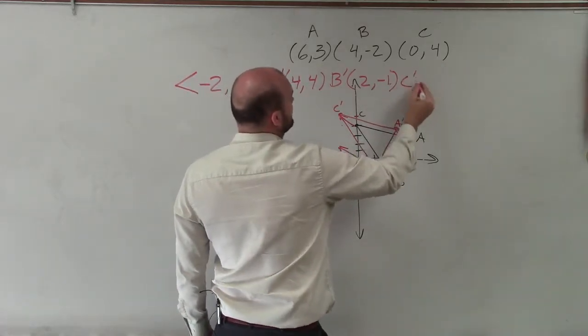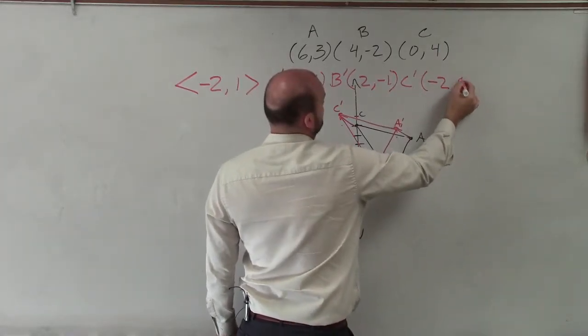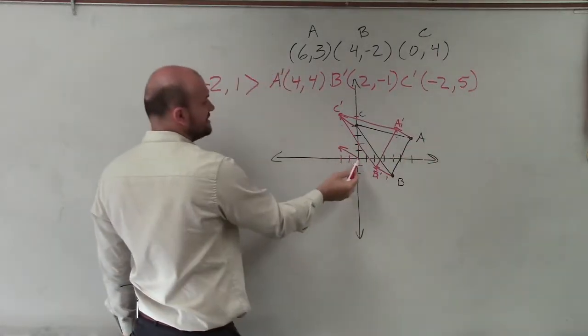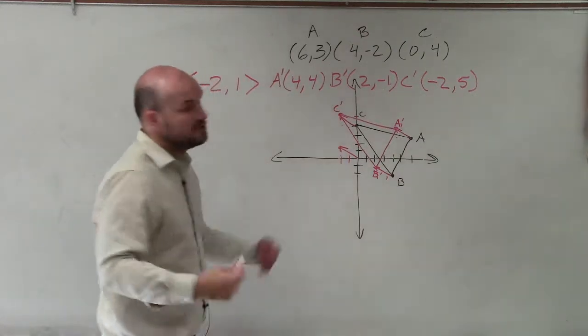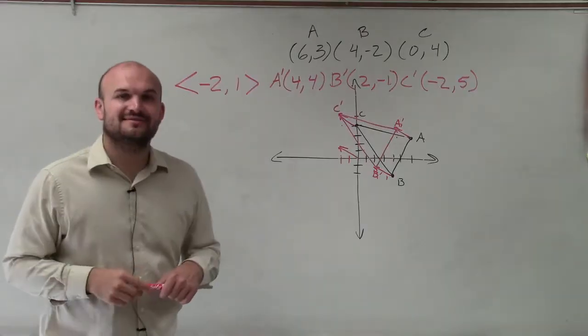And then C prime is going to be at negative 2, 5. And you can see negative 2, up 5. So there you go, ladies and gentlemen. That is how you apply your translation vector for the translation. Thanks.